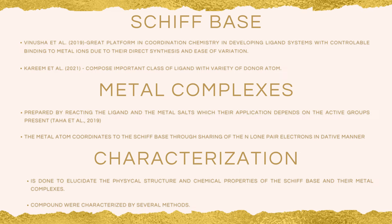Characterization is done to elucidate the physical structures and chemical properties of the Schiff base and metal complexes, and to confirm whether the compound produced is identical to the theoretical compound. The compounds were characterized by elemental analysis, melting point, FTIR, NMR, UV-Vis, and magnetic moment. Elemental analysis determines the compositions of the compounds; melting point assesses purity; FTIR identifies functional groups; NMR elucidates physical structures; and UV-Vis along with magnetic moment are used for geometrical determinations.